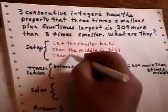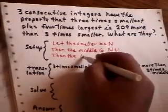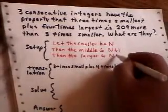The larger is going to be the next number along, and the larger is going to be two more than the smaller. So it is n plus two.